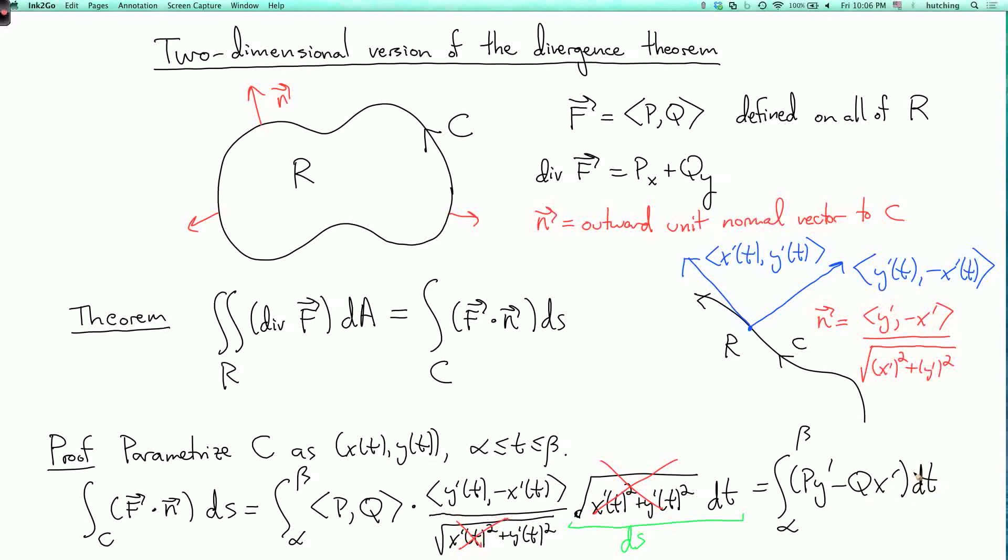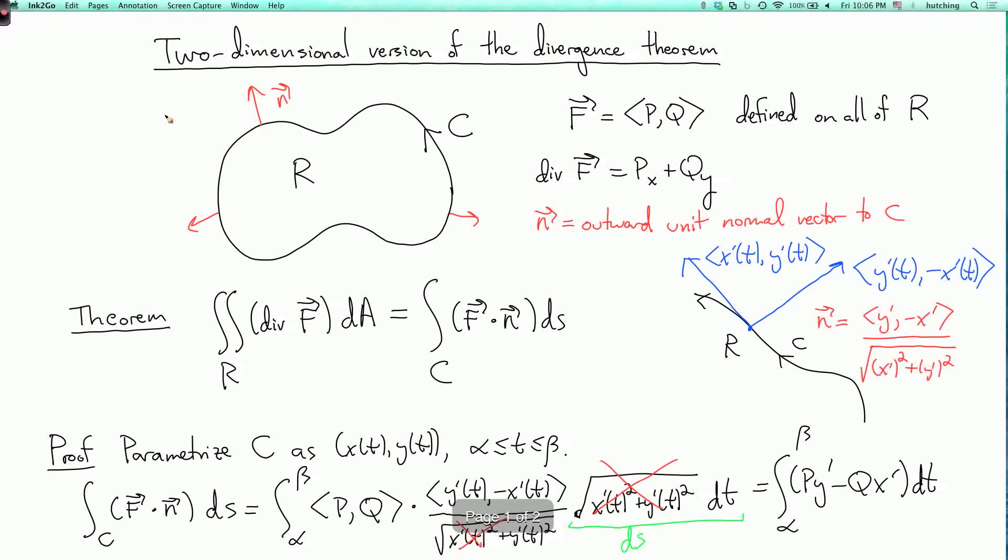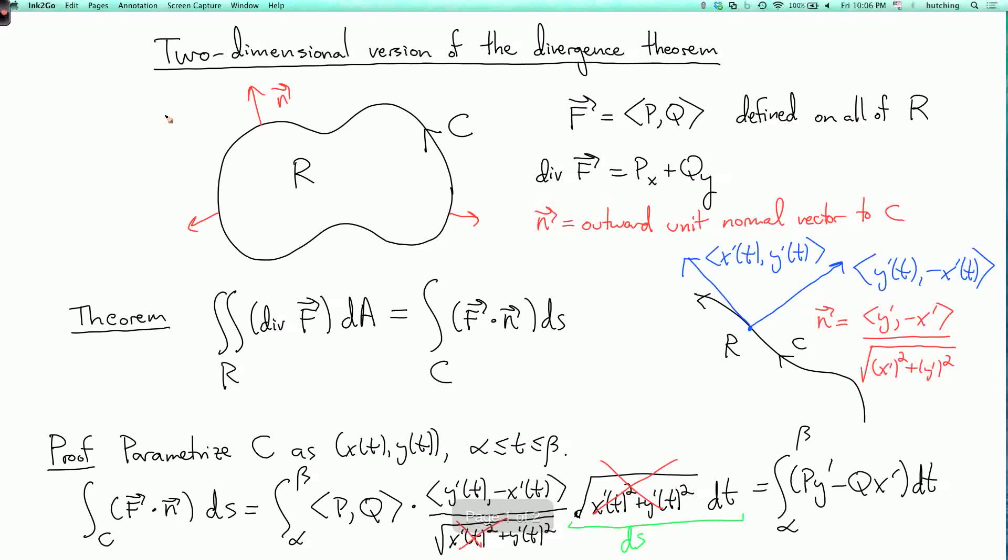And what I get is the integral from alpha to beta of p y prime minus q x prime dt. And remembering that x prime dt is dx and y prime dt is dy, I can rewrite this. I'll do it on the next page. So this is the integral over c of what? So what did we have? We had a p y prime dt turned into a p dy and the other part was q dx.